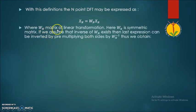Here WN is the matrix of linear transformation, where WN is a symmetric matrix. If we assume that inverse of WN exists, then the last expression can be inverted by pre-multiplying both sides by WN raised to minus 1.